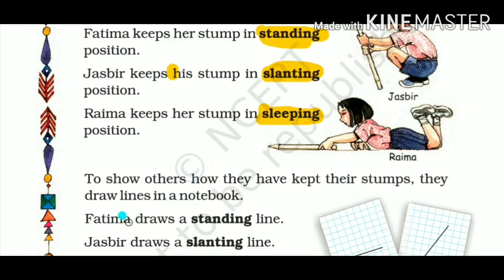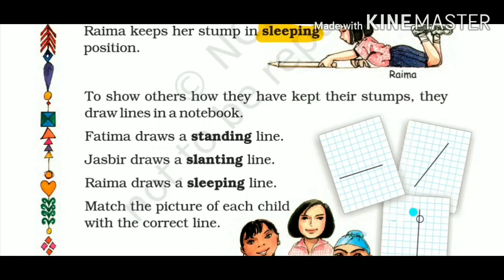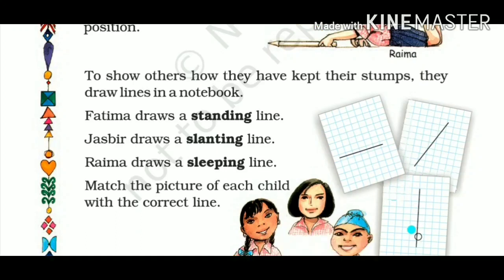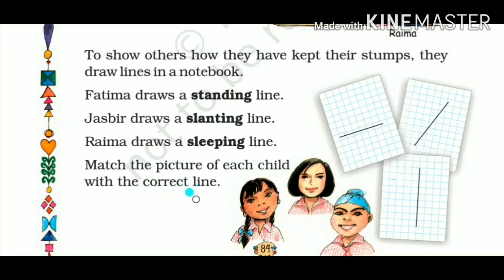To show others how they have kept the stump, they draw some lines in a notebook. Fatima draws a straight line — this straight line is Fatima's. Jasbir draws a slanting line because he kept his stump slanting. And Raima draws a sleeping line. Now match the picture of each child with the correct line.